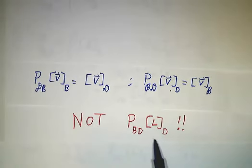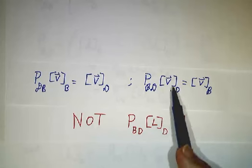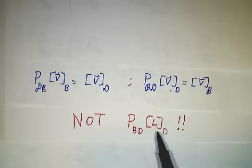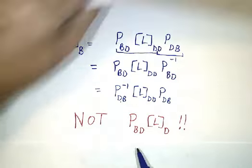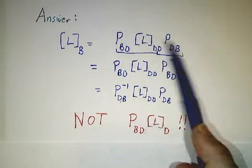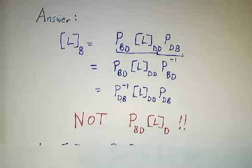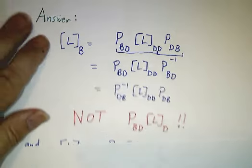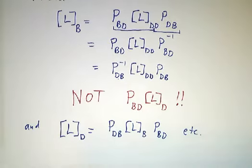The way you do a change of basis for vectors is you multiply on one side by the change of basis matrix. The way you do it for operators is you need to multiply on both sides by the appropriate change of basis matrix. You can also express Lb in terms of Ld — just reverse the roles of b and d throughout.